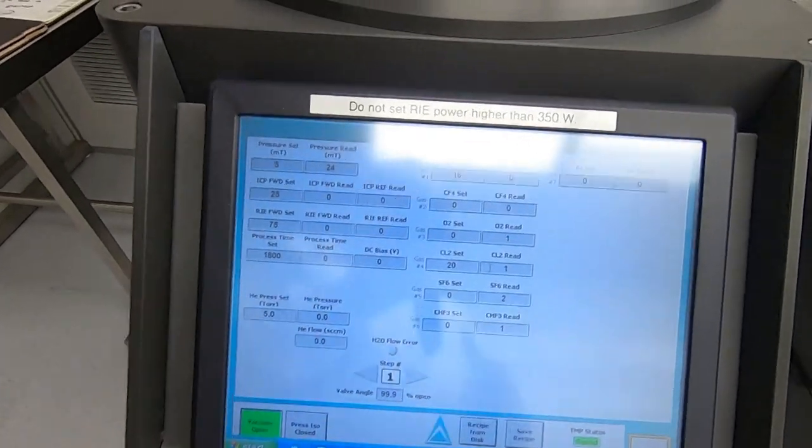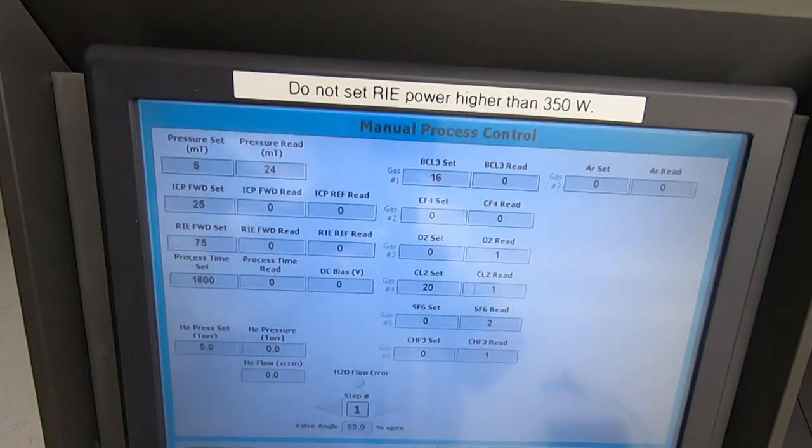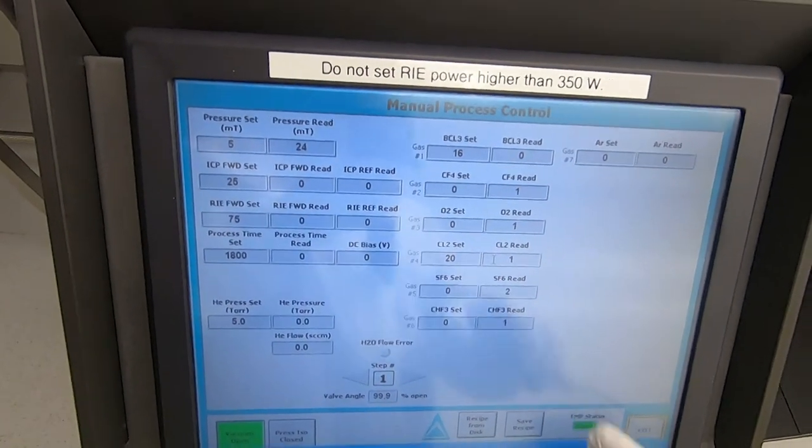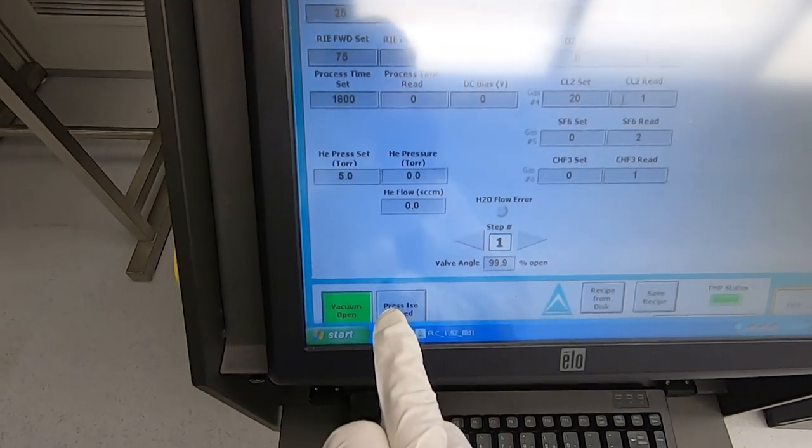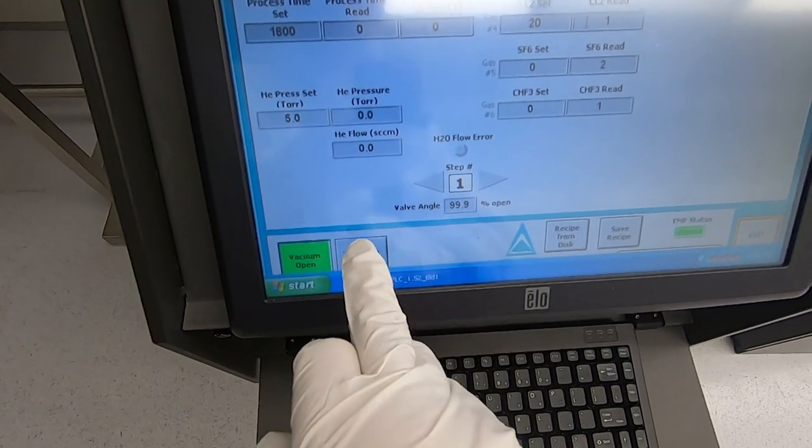So this is an example of manual mode operation. So you have a recipe. I can change each of these parameters.